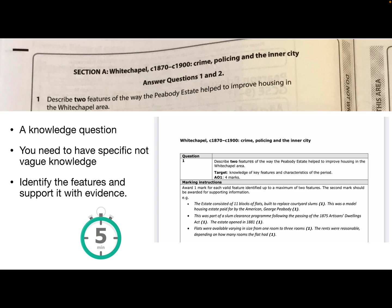The first section is Whitechapel. You're going to spend 20 minutes on this section and you've got those three questions to answer. Two of them are only going to take you five minutes. Our first question then, describe two features of the way the Peabody estate helped to improve housing in the Whitechapel area.